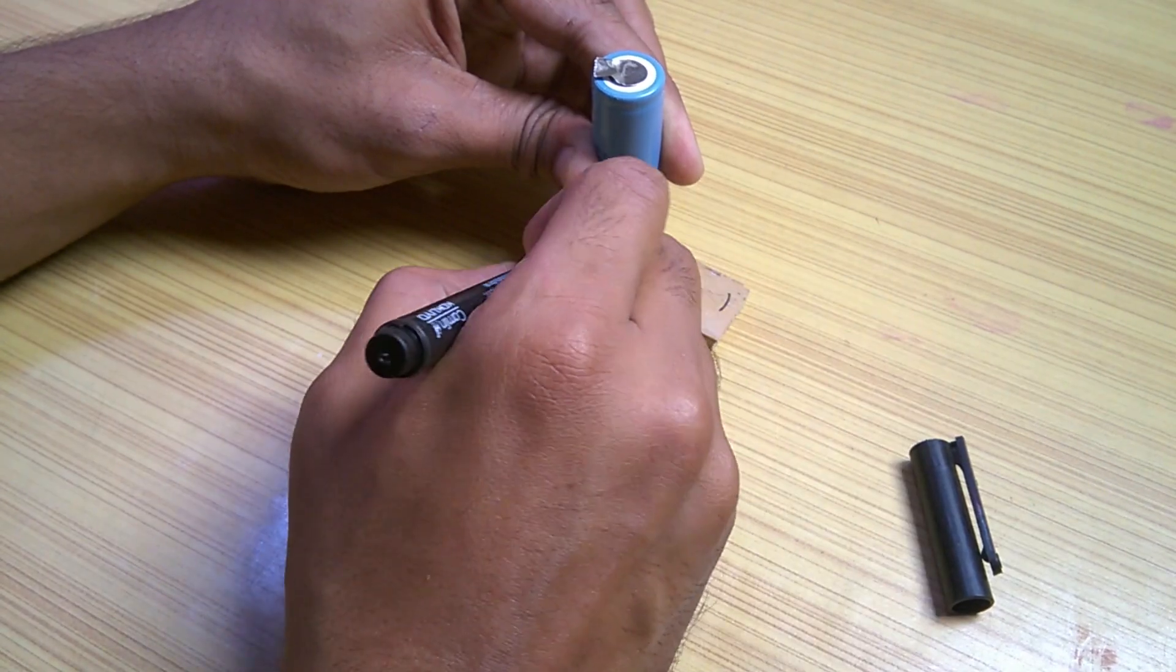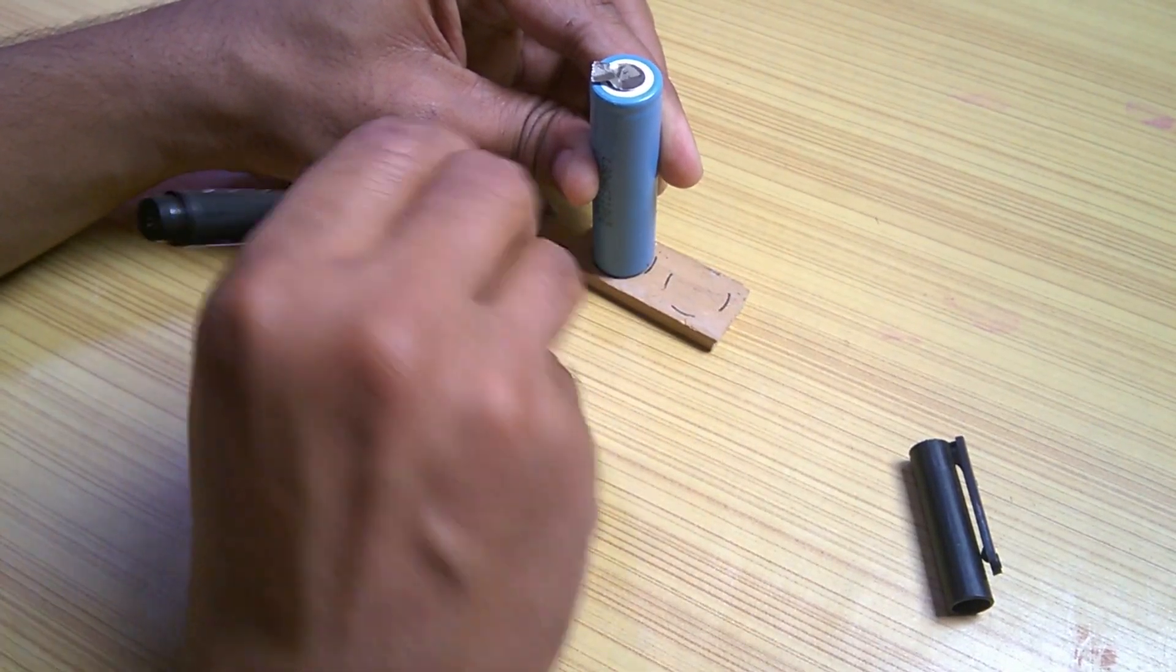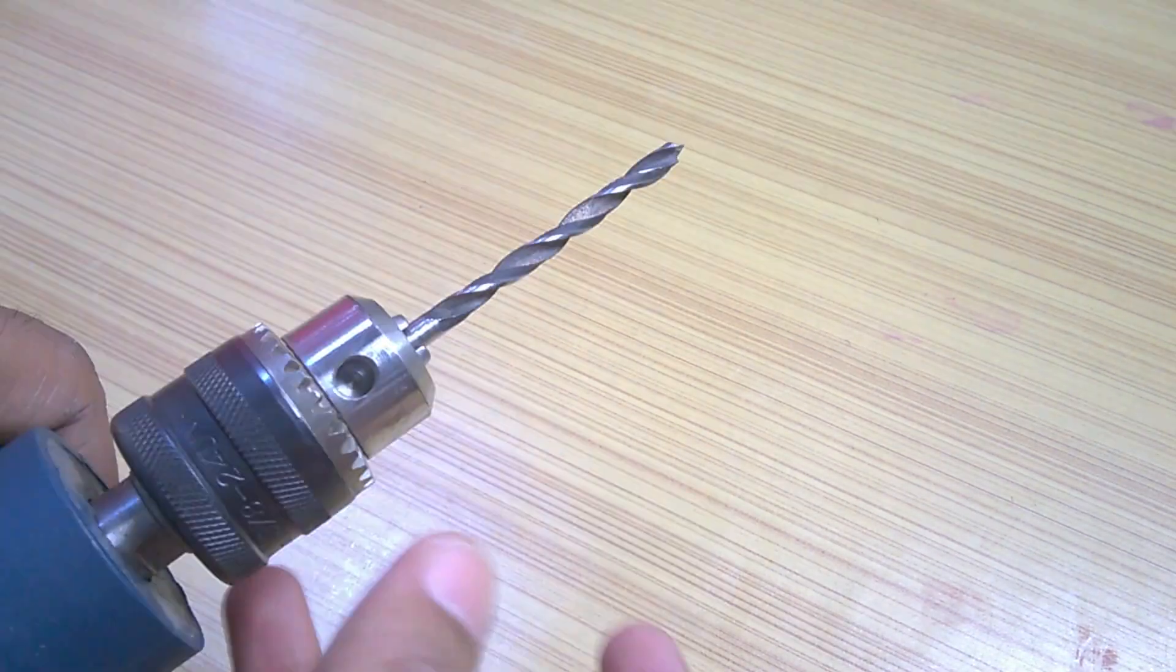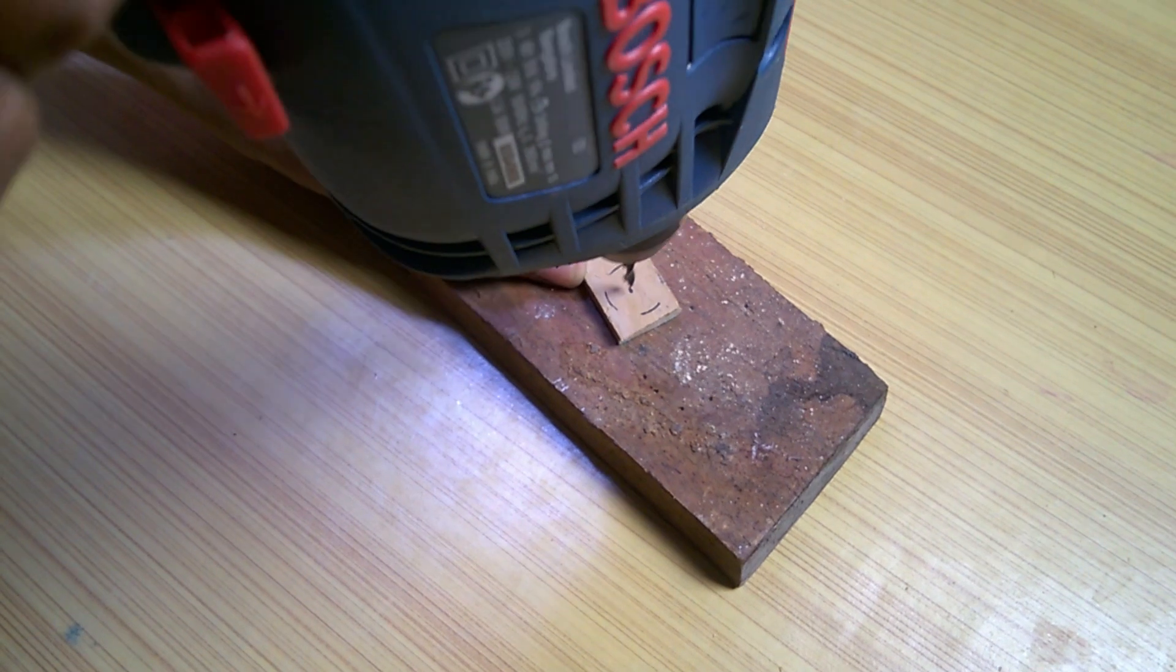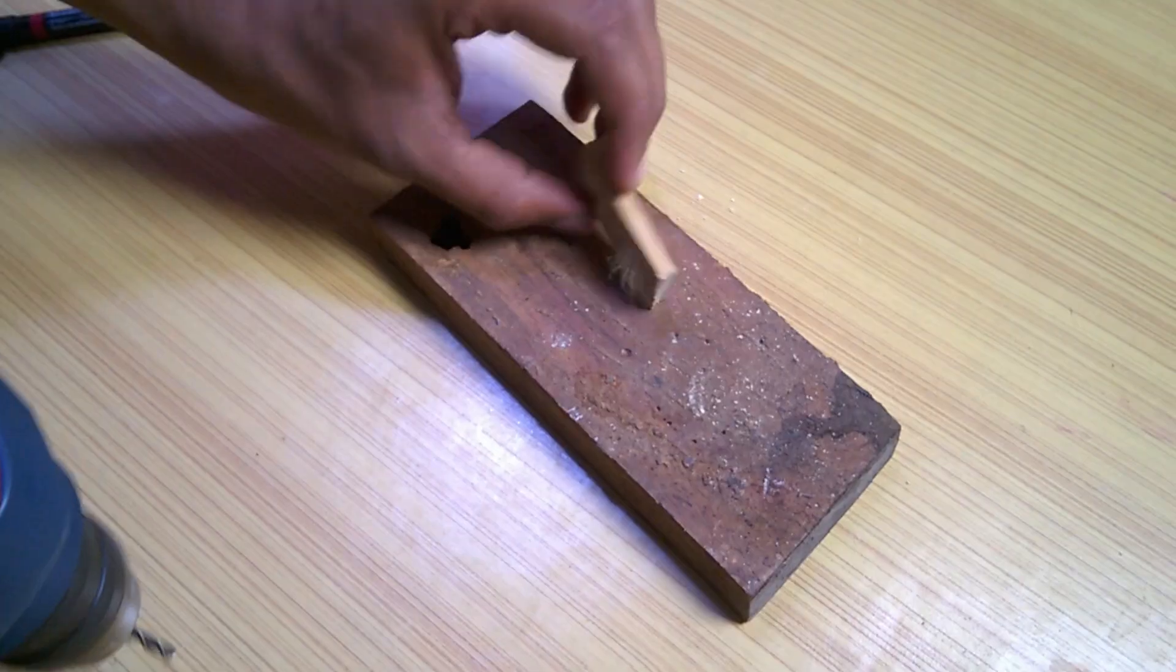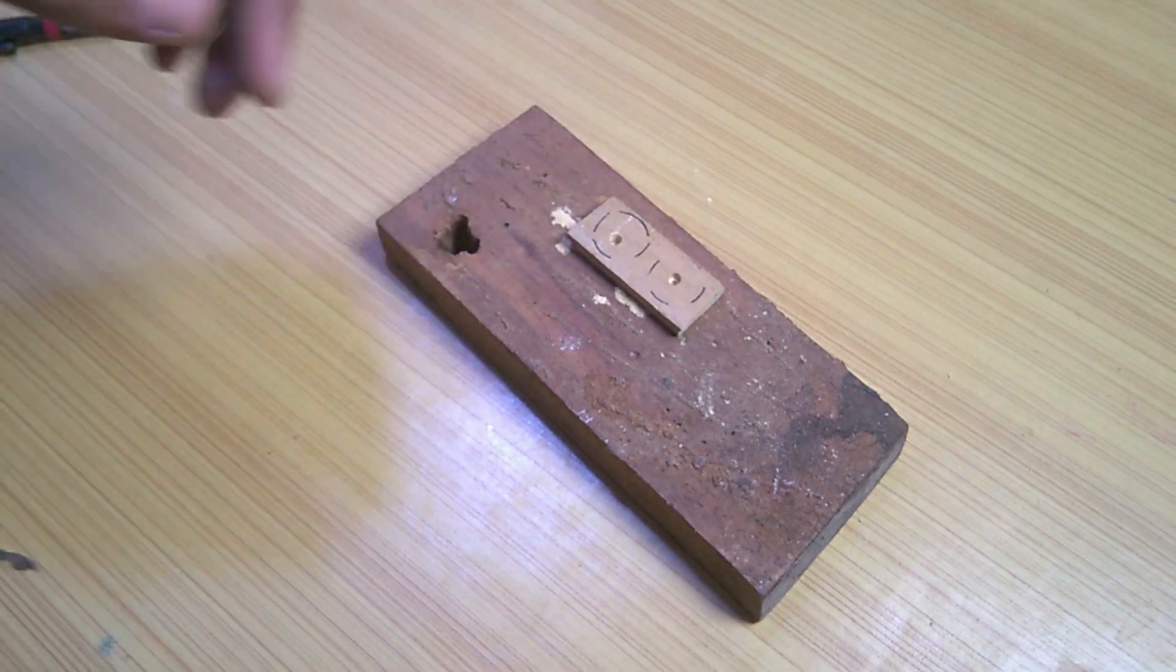I marked the spot for two batteries and their centers as well which will guide during the drilling process. Using a 5mm drill bit, I drilled two pilot holes in the center marked on the wood pieces previously. This will help us in enlarging the holes so that our batteries can fit in the wood pieces easily.